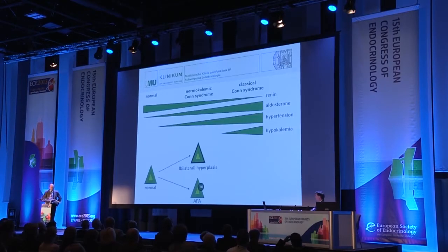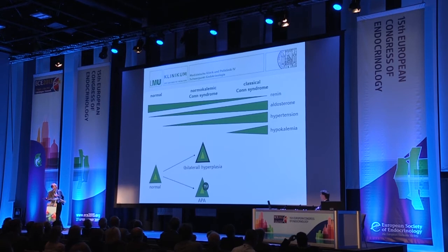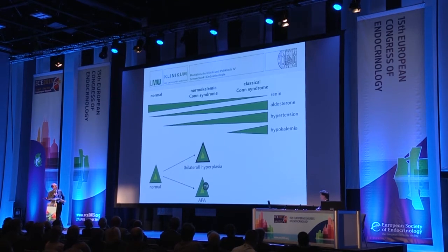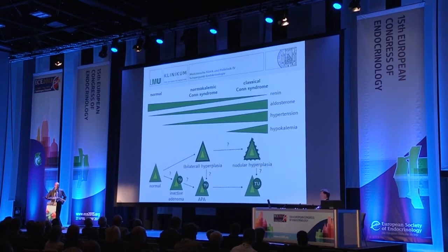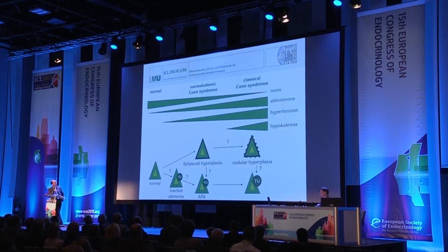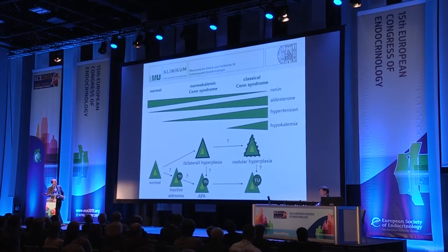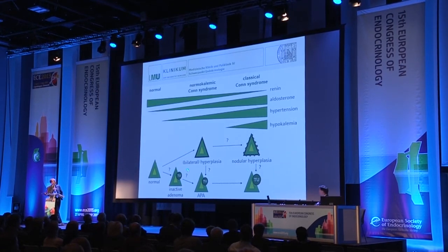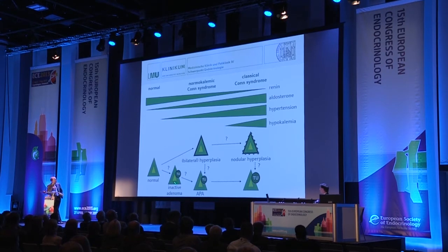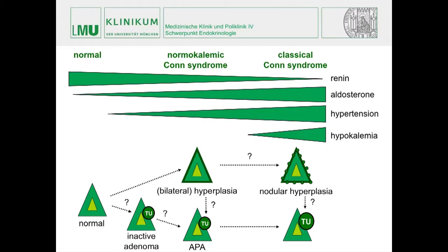Primary aldosteronism comes in two flavors: the bilateral disease with hyperplasia of the zona glomerulosa, and the unilateral form with an aldosterone-producing adenoma on one side of the adrenal. However, it's not clear whether there are transitions from bilateral hyperplasia to unilateral disease, what causes established tumors, or whether there's a precursor endocrine-inactive tumor that later acquires the ability to produce aldosterone. These interactions are still under ongoing research.